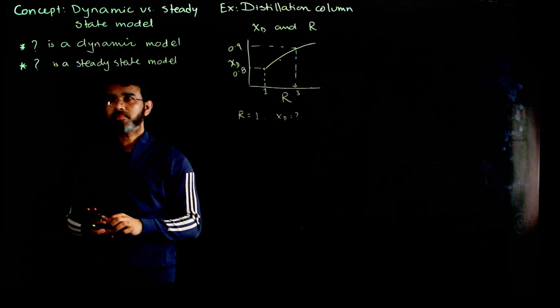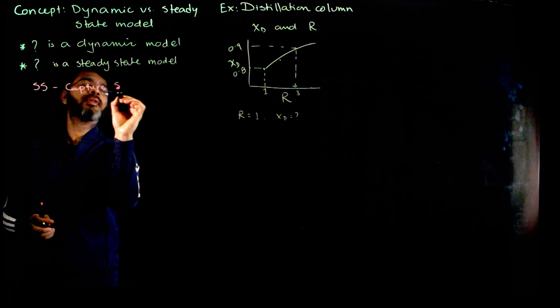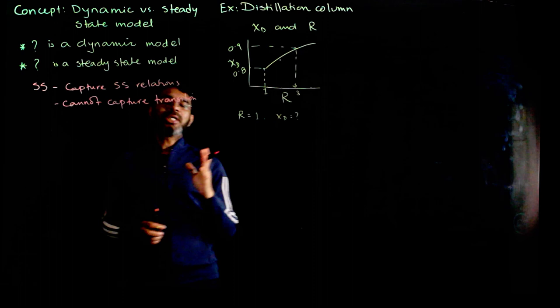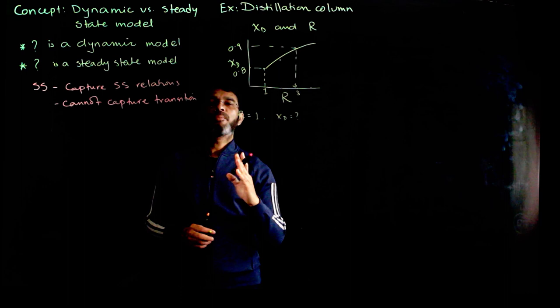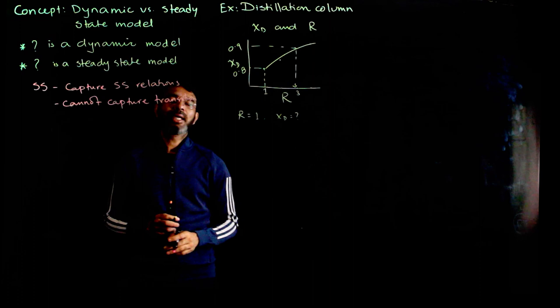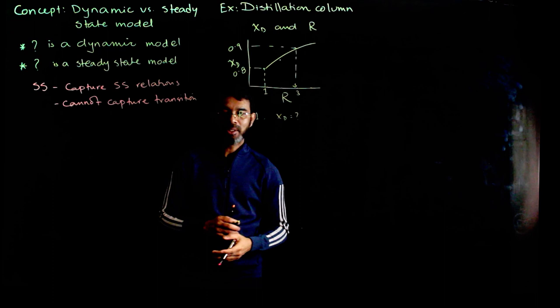The steady state model captures the steady state relation, but it cannot capture the transition — meaning if you change the reflux ratio from 1 to 2, how the top composition changes, how long it takes, and what path it follows going from the initial value of 0.8 to 0.9.